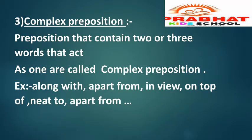Next is the complex preposition — it contains two or more words but they act as one. Examples include: along with, apart from, in view, on top of, and next to. For instance: 'Along with your original document, you have to bring your xerox copy also.' Or: 'In my view, you are the real culprit in this case.' Or: 'On top of this, you are showing hesitation.' Or: 'Apart from this fair copy, I want to see your rough copy also.'